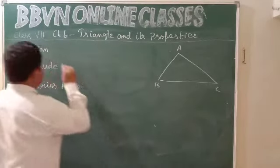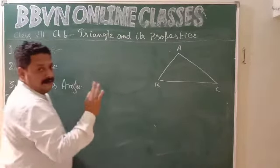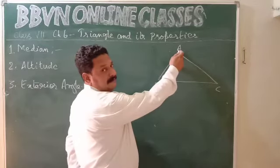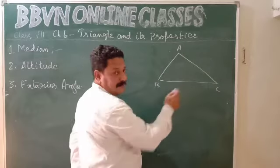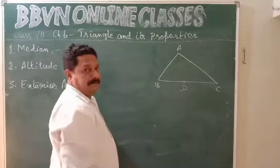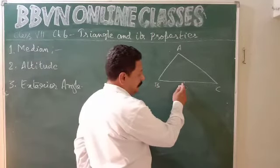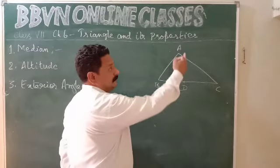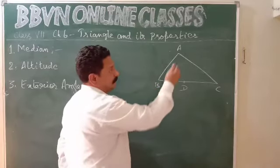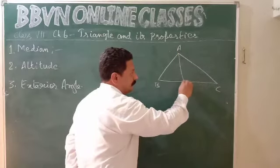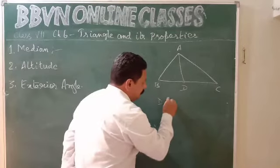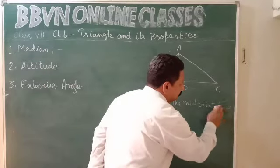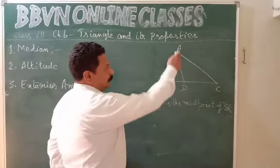First comes median. What is a median? If I join any vertex of a triangle to the midpoint of the opposite side — I have vertex A, and the side opposite to vertex A is side BC. Consider point D which is the midpoint of BC. It means length BD equals length DC. So D is the midpoint of BC, and if I join vertex A to D, the line segment AD is called a median.